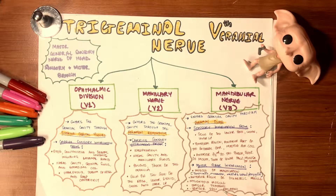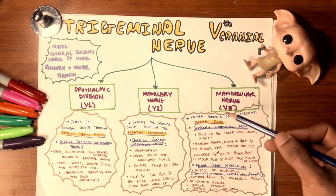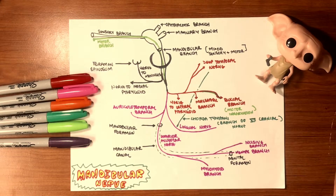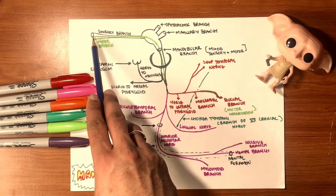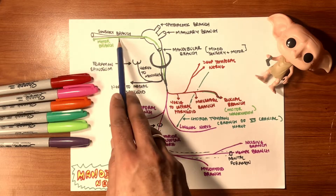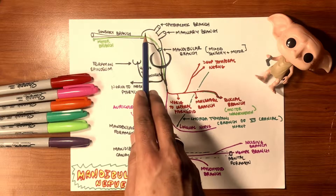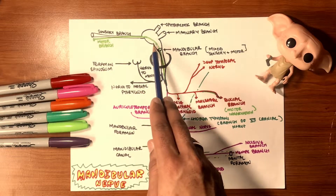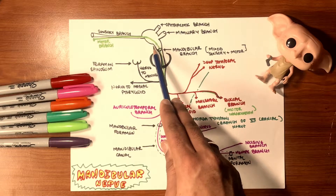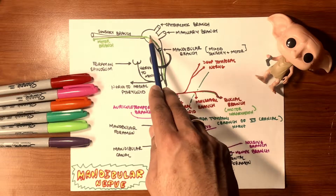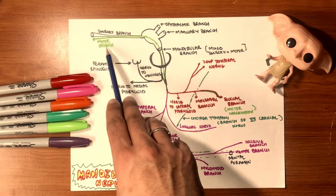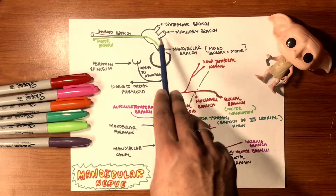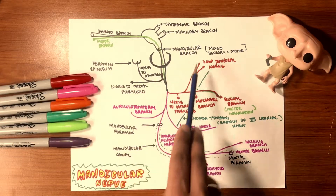Now let's get into specifically the mandibular nerve with a schematic diagram overview. The trigeminal nerve is initially sensory, then later joined by the motor branch. It crosses the semilunar — also known as the mandibular, masticatory, or trigeminal — ganglion. This ganglion acts as a relay station, splitting the trigeminal nerve into three branches: ophthalmic (upper third), maxillary (middle third), and mandibular. The motor innervation comes right down to the mandible — the mandibular branch is mixed, sensory and motor.